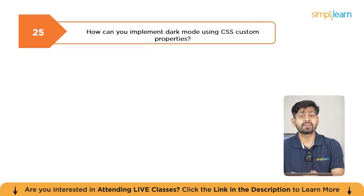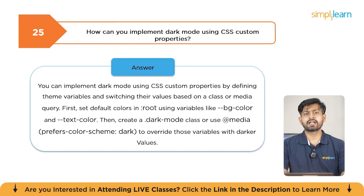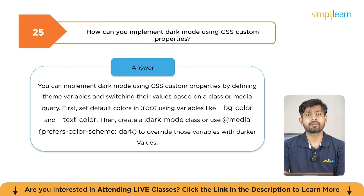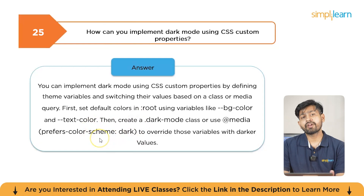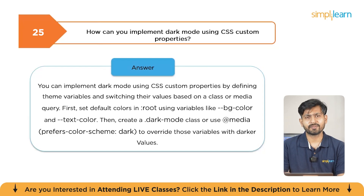How can you implement dark mode using CSS custom properties? You can implement dark mode using media queries for prefers-color-scheme and CSS custom properties. For example, using @media (prefers-color-scheme: dark) you can override CSS variables with darker values, and your UI will display a dark theme.